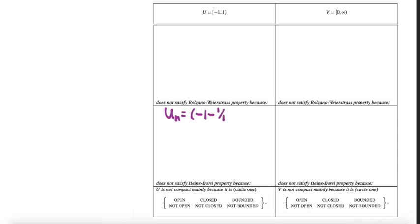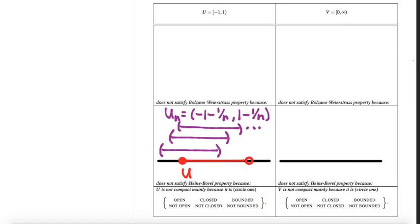So first one that I wrote down was for this set U. For the set U, which is the closed interval from minus one to one, why does it not satisfy the Heine-Borel property? This is one, this is negative one back here.